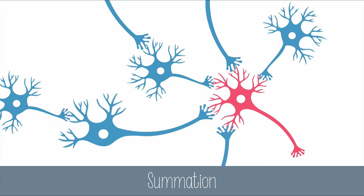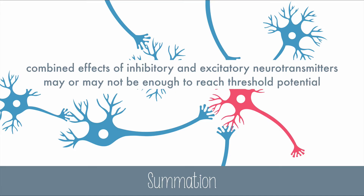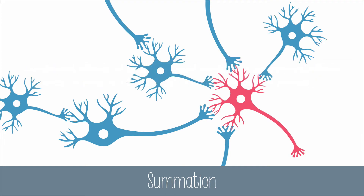The neurotransmitters have an additive effect called summation. This means the combined effects of inhibitory and excitatory neurotransmitters may or may not be enough to reach threshold potential. Sometimes one neuron will release enough neurotransmitter to cause an action potential.